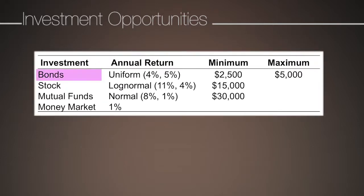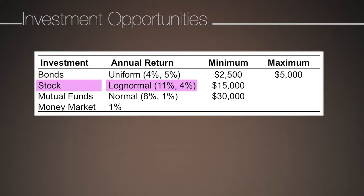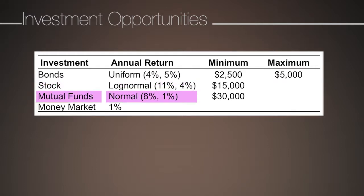The annual return of bonds is assumed to be a uniform distribution between 4% and 6%. The returns of stock follow a log-normal distribution with mean of 11% and standard deviation of 4%. The returns of mutual funds is considered to follow a normal distribution with mean of 8% and standard deviation of 1%. The money market is considered to have a fixed return of 1%.